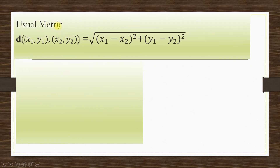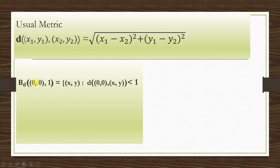The second example is the usual metric. The usual (Euclidean) metric is defined as d((x1, y1), (x2, y2)) = √((x1 − x2)² + (y1 − y2)²). Consider an open ball with center (0, 0) and radius 1, which by definition equals the set of all (x, y) such that d((0,0), (x,y)) < 1.